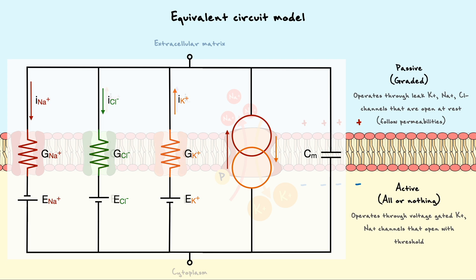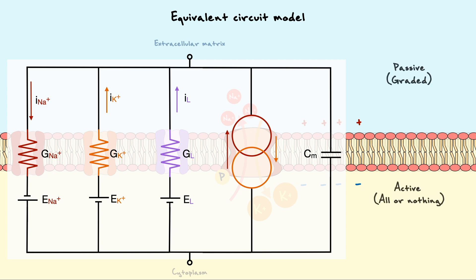To correct it, I will use this circuit instead, where the purple channel represents the currents coming from all the leak channels and the two other channels are the active voltage-gated channels. As we will see later, the conductances in the active channels change as a function of time and voltage, which is illustrated by these arrows that cross the resistor symbols.